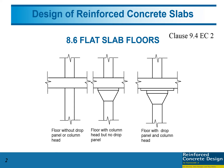The question is how to decide whether we need to provide a flat slab with or without a drop panel or column head. If the punching shear strength is sufficient for the flat slab alone, we use it as-is. If not, instead of making the slab thicker, we add a column head. If the punching shear is still insufficient with a column head, we then introduce a drop panel.